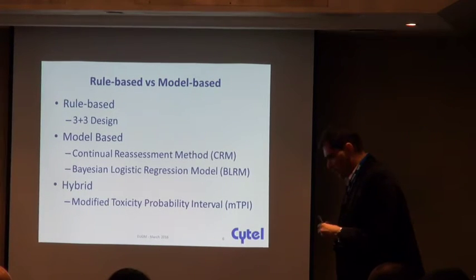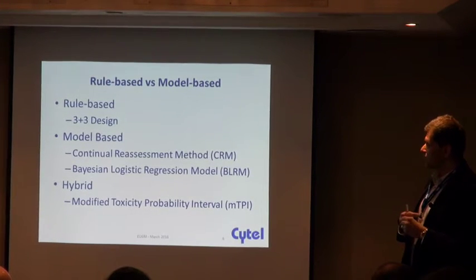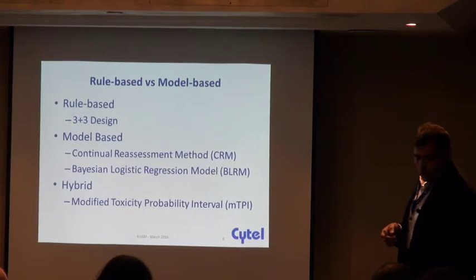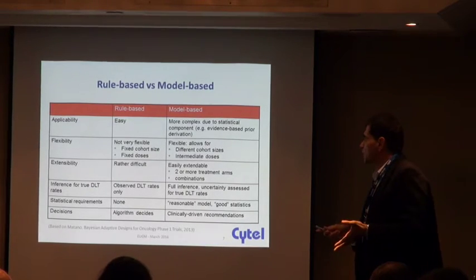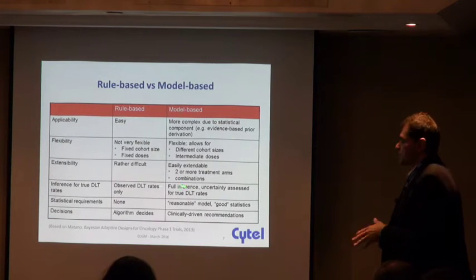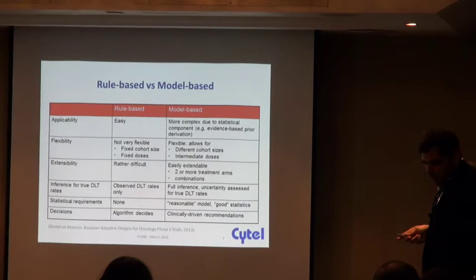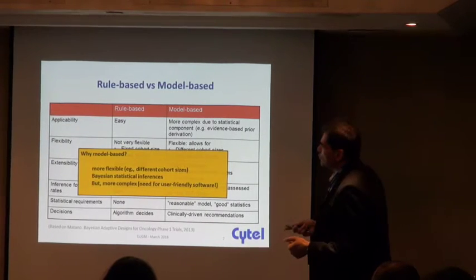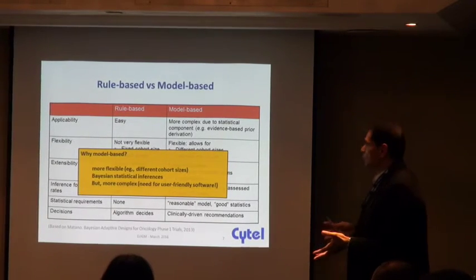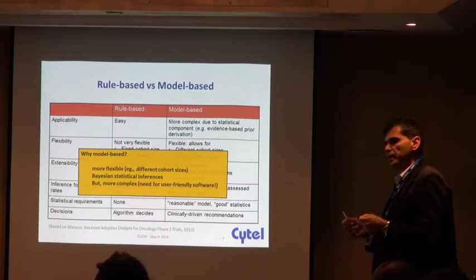In particular, they use — like in the PIPE approach that Adrian demonstrated — independent beta distributions for these probabilities of toxicities. With model-based approaches, the difference between rule-based and model-based approaches has been explored extensively in conferences. I am a little biased: I would go towards model-based approaches because I find them more flexible. They utilize different cohort sizes and Bayesian statistical inference, which is naturally the way we tend to think.